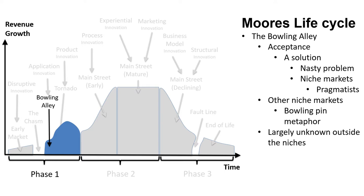Stage 3: The Bowling Alley. The technology is gaining acceptance among pragmatists in one or more niche markets where it provides a solution to a nasty problem. When a niche adopts the technology, adjacent niche markets become willing to accept it — hence the bowling pin metaphor. Within each niche, the technology builds a loyal following and attracts partners who see a market in the making. Outside the niches, it is still largely unknown.